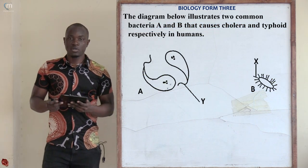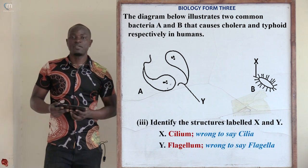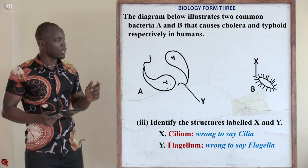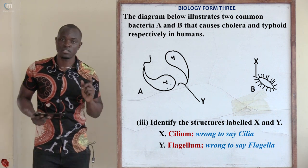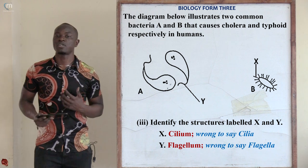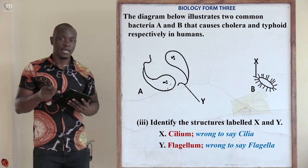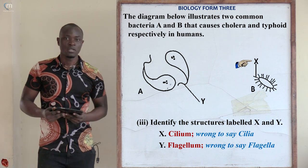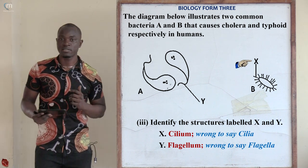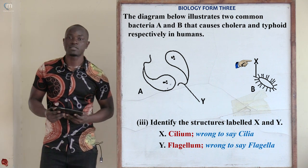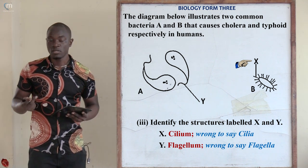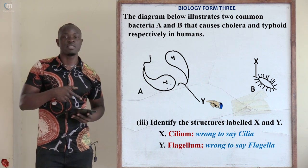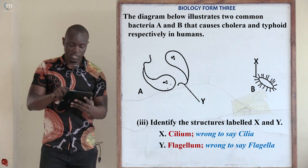Roman numeral three asks us to identify the structures labeled X and Y in the diagram. Structure X is found in organism B and structure Y is found in organism A. Structure X is called the cilium, and structure Y is called the flagellum.